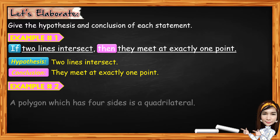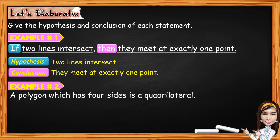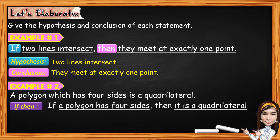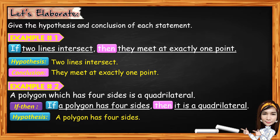For example number 2, we have: a polygon which has four sides is a quadrilateral. As you observe, there is no if and then, so we are going to write it in the if-then form or conditional. The if-then form is: if a polygon has four sides, then it is a quadrilateral. For the hypothesis, the if part is a polygon has four sides. And for the conclusion, the then part is it is a quadrilateral.